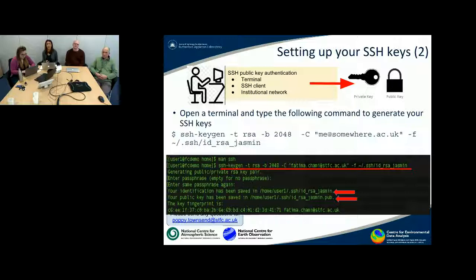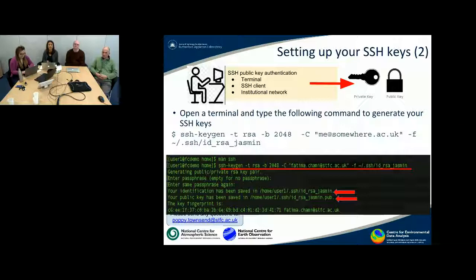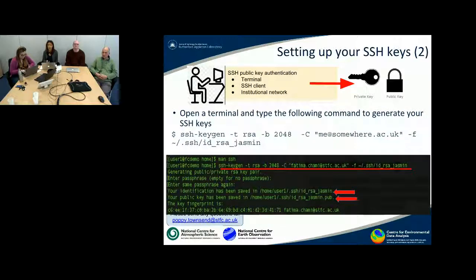To set it up: you have to use your institutional network. You'll be creating two keys — a private key and a public key. Open the terminal, type the following command: 'ssh-keygen', as highlighted in the screenshot from a terminal. This will generate two keys: an id_rsa Jasmine key, shown with the double arrow at the end.